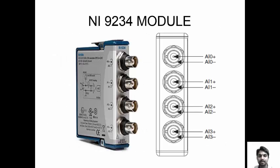This is the DAQ model, the NI9234. Here we can see that there are 4 channels — 4 analog input channels. In the middle are AI0 plus, AI1 plus, AI2 plus, and AI3 plus. These are all the positive signals. The DC voltage will be explained in the next slides.